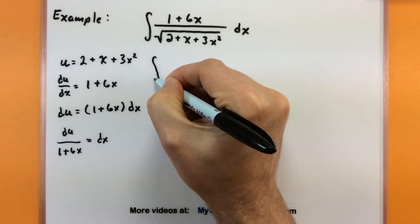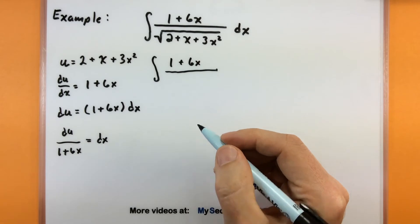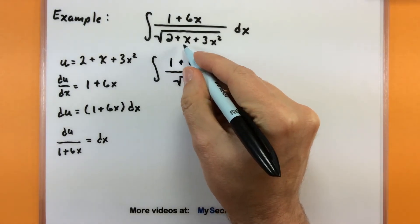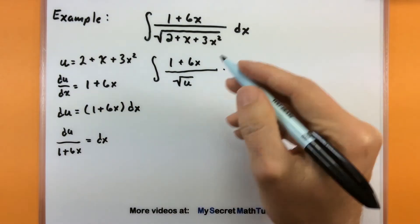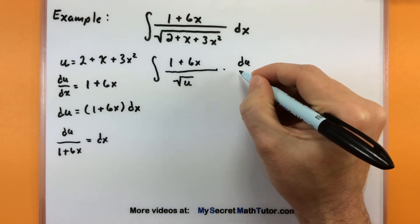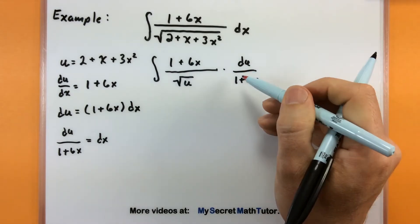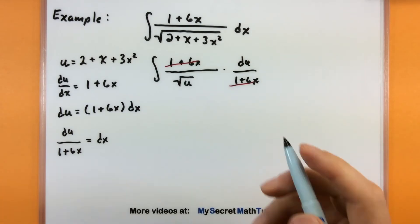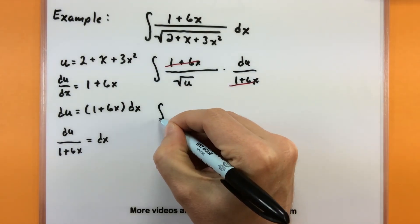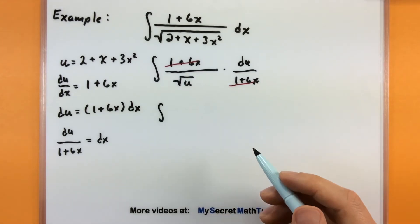Going back to our integral: the top still has 1 plus 6x for now, and the entire bottom piece is what we're calling u, so we just have the square root of u. We replace dx with du divided by 1 plus 6x. The 1 plus 6x cancels out the 1 plus 6x — that's what we want. At this stage, we only want u's; you can't really move forward if you have both u's and x's.